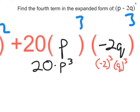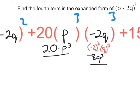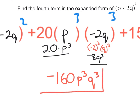We have negative 2 to the third power times Q to the third power. Negative 2 times negative 2 times negative 2 gives you negative 8, and Q to the third is simply Q cubed. Then we multiply: 20 times negative 8 equals negative 160, and we have P to the third and Q to the third. So the fourth term is negative 160 P to the third Q to the third.